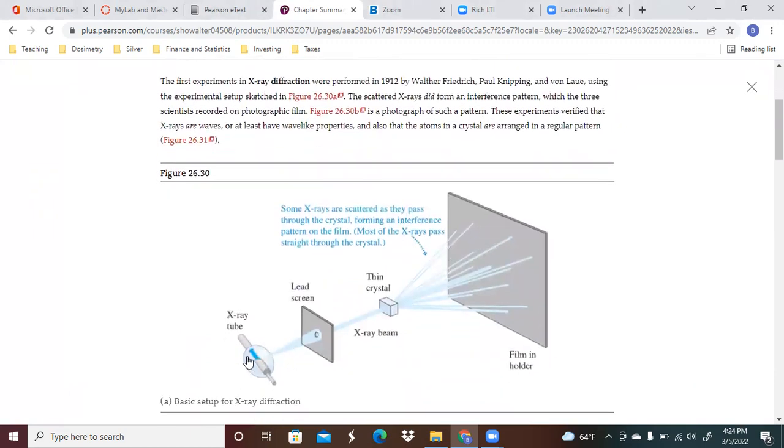So you got an X-ray tube. So you got X-rays being produced here on the lead screen comes through some sort of thin crystal which is going to have your diffraction grating. And some X-rays are scattered as they pass through it forming an interference pattern on the film. Most of the X-rays pass straight through the crystal.